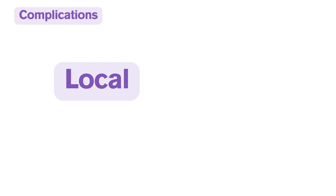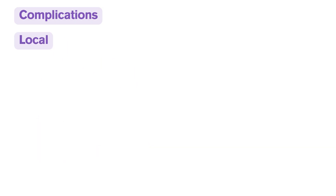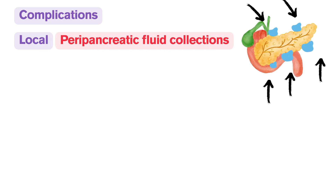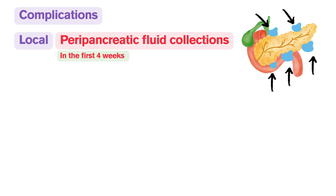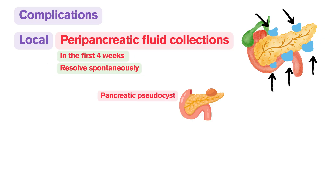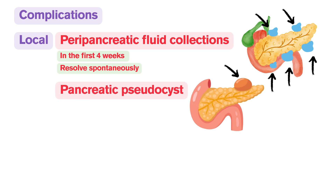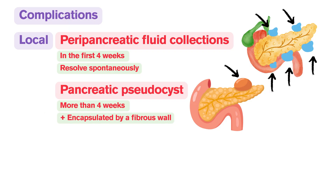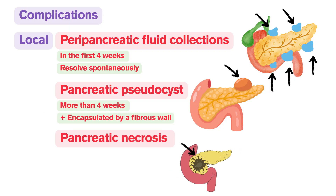Complications of acute pancreatitis are divided into local and systemic complications. Local complications develop in or around the pancreas. There are three main local complications: peripancreatic fluid collections, which are accumulations of fluid around the pancreas appearing within the first four weeks and often resolving spontaneously; pancreatic pseudocyst, which forms if an acute fluid collection persists for more than four weeks and is encapsulated by a fibrous wall; and pancreatic necrosis, a serious complication where pancreatic or peripancreatic tissue is destroyed by the inflammatory process.